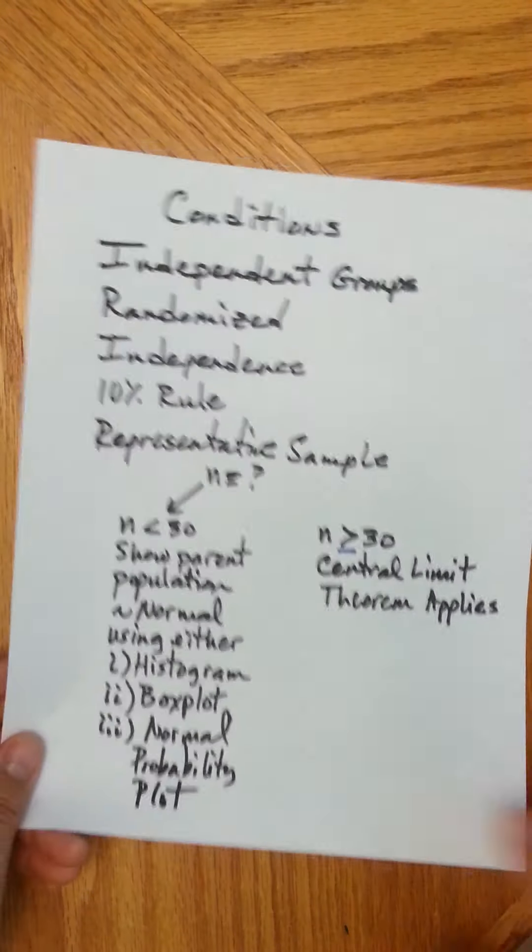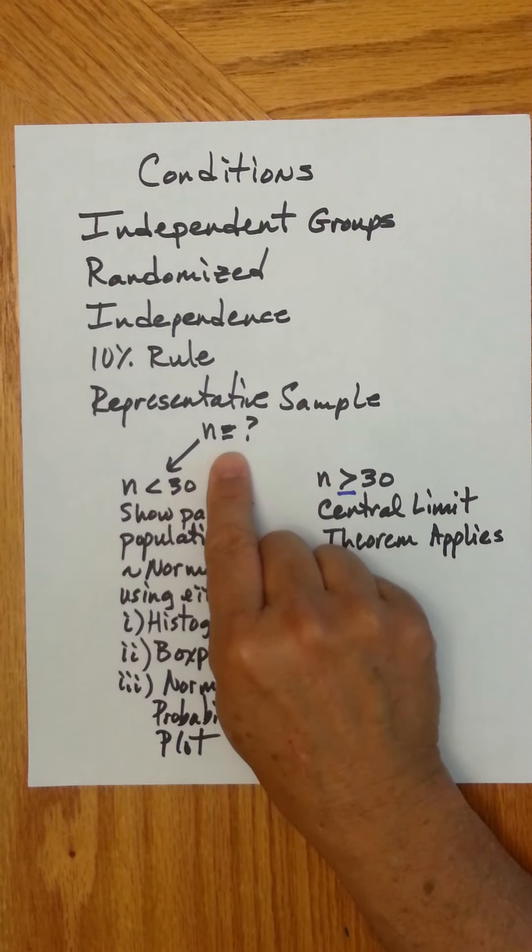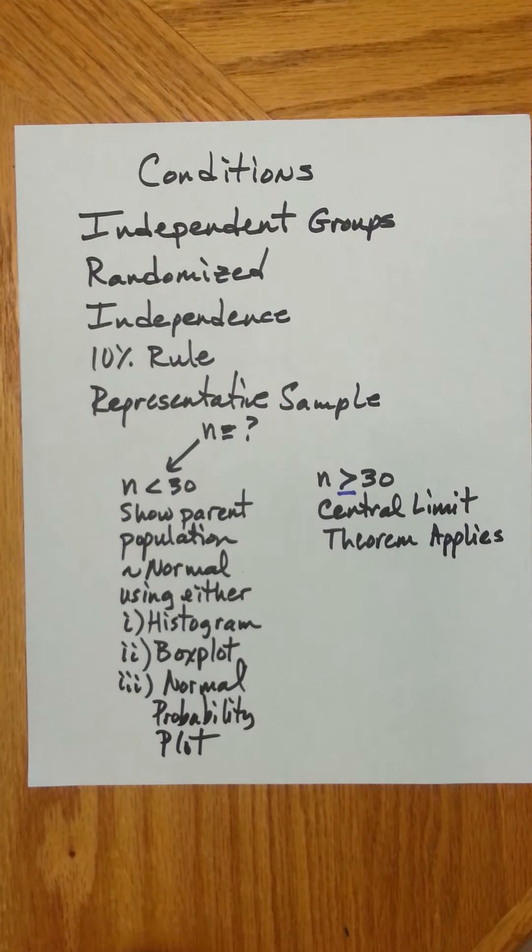For the conditions, these should look familiar. We want to assume that the groups are independent. For example, you wouldn't have any matched pairs like before and after, like test scores before and test scores after where you're talking about the same person. Instead, they're independent groups. There's randomization in the way the objects or people are selected. There's independence where the outcome of one trait doesn't affect the outcome of another. The 10% rule: the sample size is less than 10% of the population. In representative sample, we're talking about a numerical trait. Depending on the sample size, n equals what? Well, if n is small, which is considered to be less than 30,